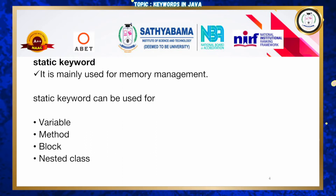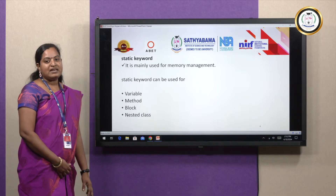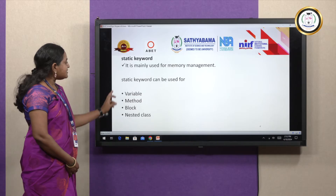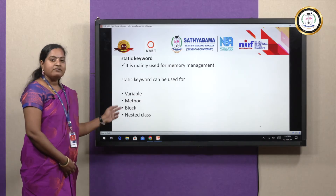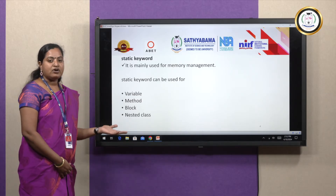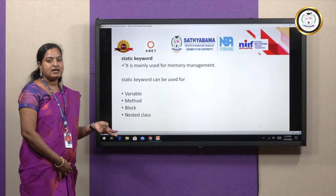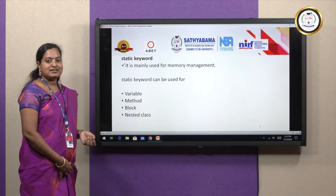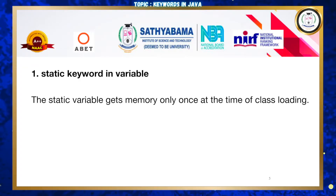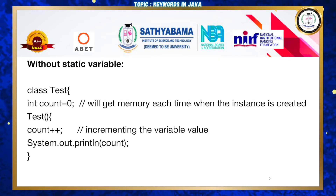First, the static keyword. It is mainly used for memory management purposes. We can use the static keyword for variables, methods, blocks, and nested classes. For static variables, the static variable gets memory only once at the time the class is loading.